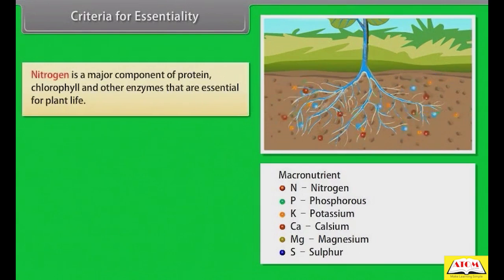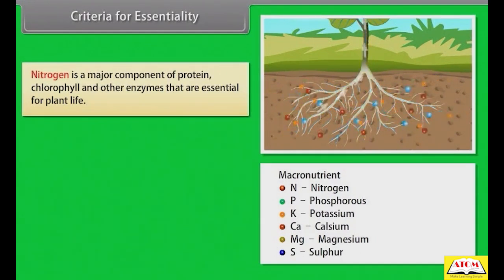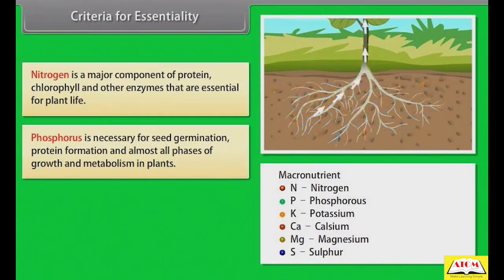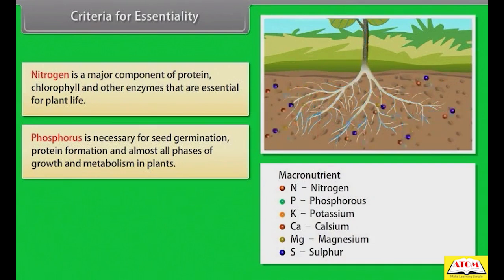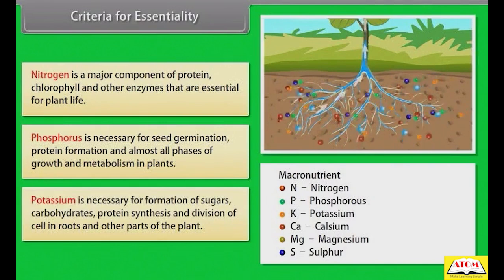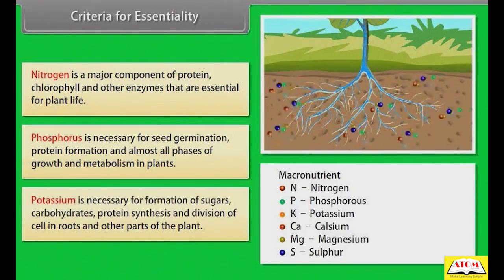Nitrogen is a major component of protein, chlorophyll and other enzymes that are essential for plant life. Phosphorus is necessary for seed germination, protein formation and almost all phases of growth and metabolism in plants. Potassium is necessary for formation of sugars, carbohydrates, protein synthesis and division of cells in roots and other parts of the plant.